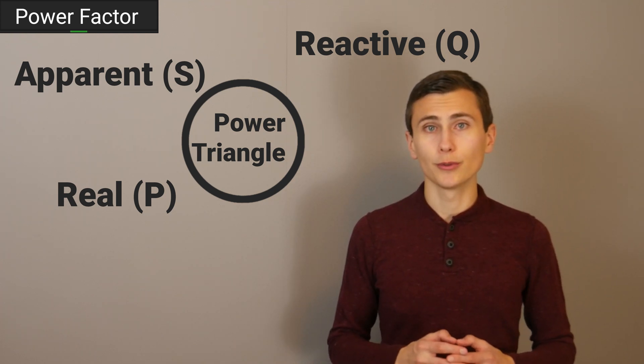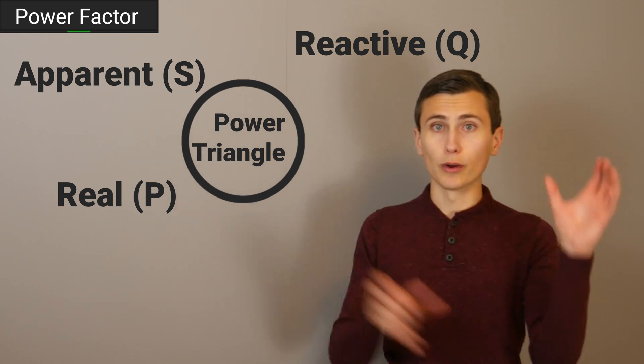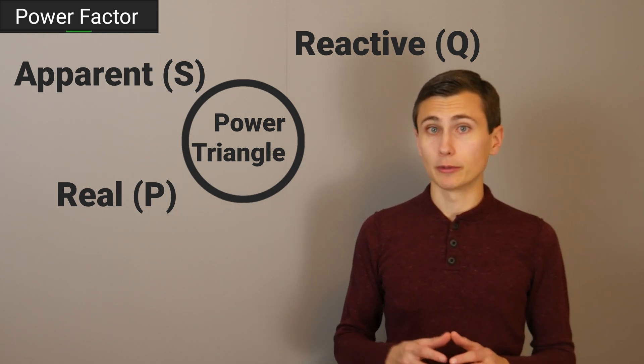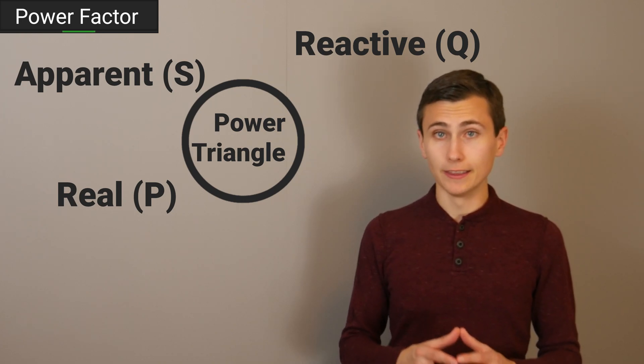The power triangle is a useful tool for translating real power, reactive power, or apparent power into one of the other forms. There's one side that represents real power, one side that represents apparent power, and one side that represents reactive power. In this case, we have infinitely many sides, which makes the situation infinitely difficult to grasp.